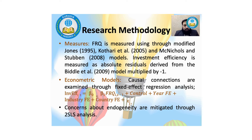The econometric model examines causal connections through fixed effects panel analysis. On the dependent side we have investment efficiency; Beta-naught is the constant term, Beta-one captures financial reporting quality — whether based on the Modified Jones, Kothari, or McNichols and Stubben model. Control represents a set of control variables identified from prior studies. Year, industry, and country fixed effects are applied; epsilon-it is the error term. Endogeneity concerns are mitigated through two-stage least squares (2SLS) analysis.